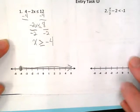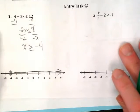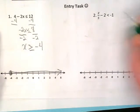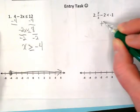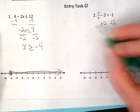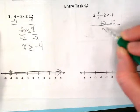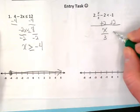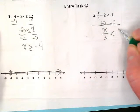The second problem we start off by wanting to add the 2 to get it away from the variable. We bring down the x divided by 3 is less than 1.